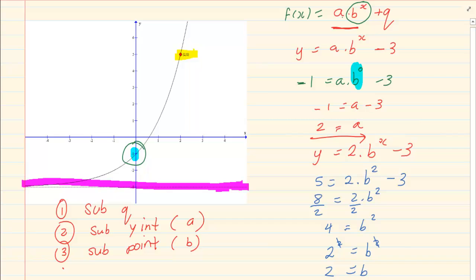Now you need to rewrite it. So what is our equation? Our final equation is f of x is equal to, our A is 2, our B is 2 to the power of x and our Q is 3.